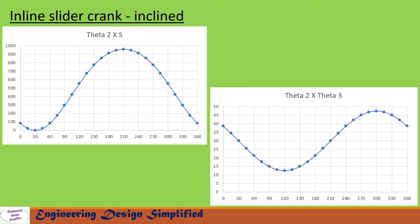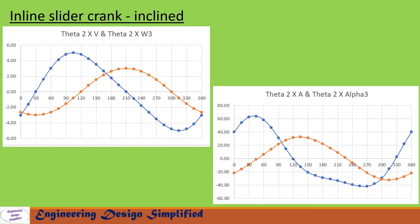The first graph plots theta 2 (0–360°) on the horizontal axis versus displacement of the slider on the vertical axis. The second graph plots theta 2 versus theta 3, showing variation of coupler angle with crank angle. The third graph plots theta 2 on the horizontal axis with velocity of slider (blue curve) and angular velocity of the coupler (yellow curve) on the vertical axis. The fourth graph plots acceleration of the slider (blue curve) and angular acceleration of the coupler, alpha 3 (yellow curve), against theta 2.